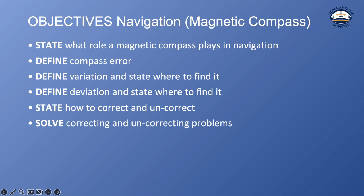We're going to state the role the magnetic compass plays in navigation. We're going to define compass error, define variation and state where to find it, define deviation and state where to find it, state how to correct and uncorrect, and solve correcting and uncorrecting problems.